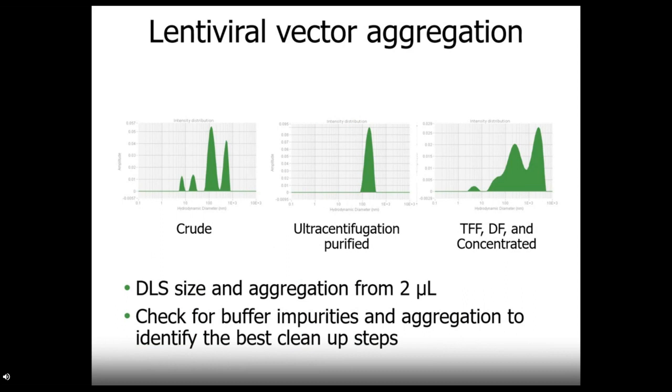Now, while we have specific applications for RNA-LNPs and adeno-associated viruses, Stunner will help you with other drug delivery systems as well. Here, we can see measurements of a lentiviral vector at different steps in the process. The crude sample has some small impurities and large impurities or aggregation. Choosing ultracentrifugation as next step shows a nice and monodispersed lentiviral vector. Now, when the same crude sample goes through tangential flow filtration, diafiltration, and concentration steps, a lot more impurities and big aggregates are showing up for this specific sample. Stunner gives you size and aggregation so you can check any step of your flow for buffer impurities and aggregation to identify the best formulations and cleanup steps.